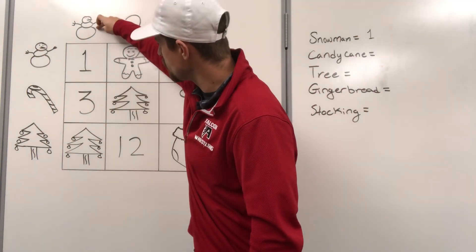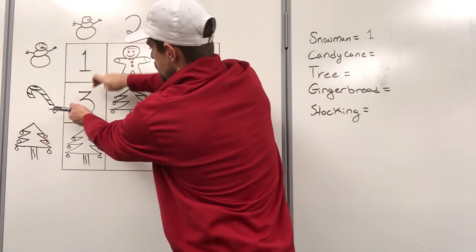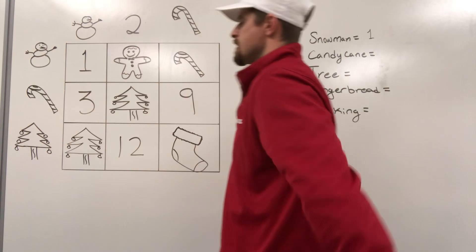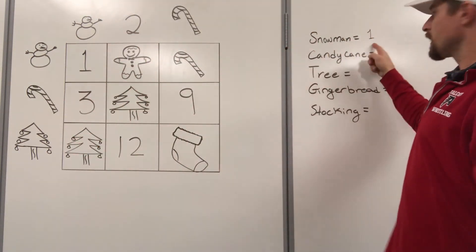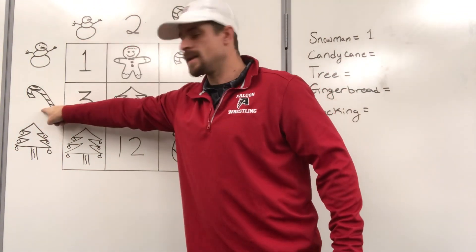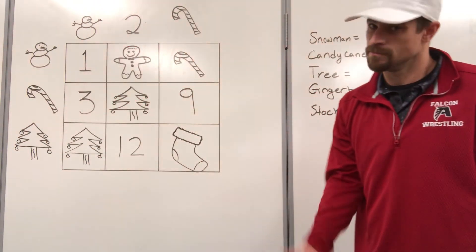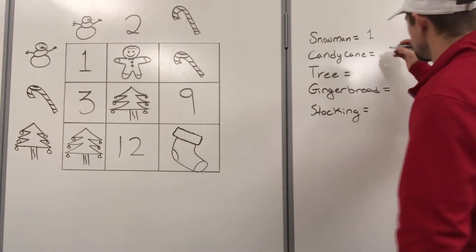A snowman times a candy cane makes three. Snowman times candy cane makes three. So we know snowman's a one. What would a candy cane have to be? One times three makes three. So candy cane's worth three.